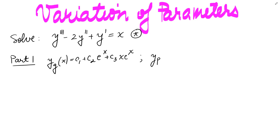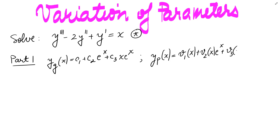The particular solution we expect to have is going to be v1(x) plus v2(x) e^x plus v3(x) times x e^x.